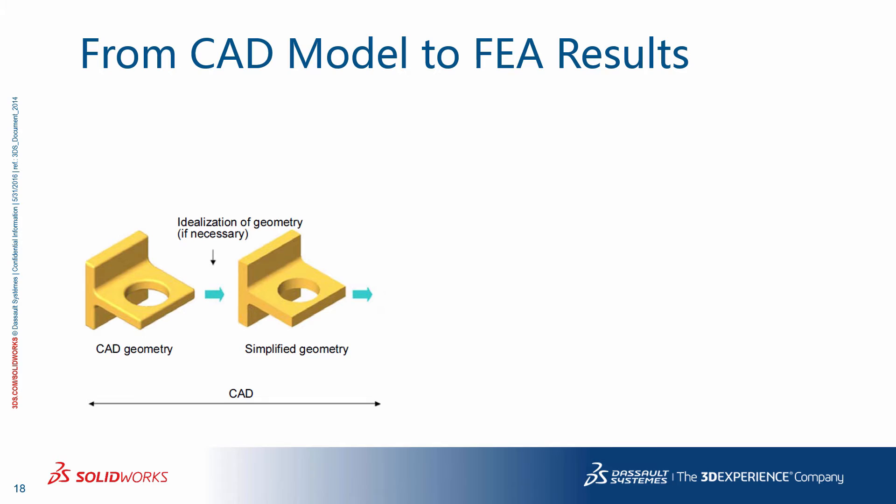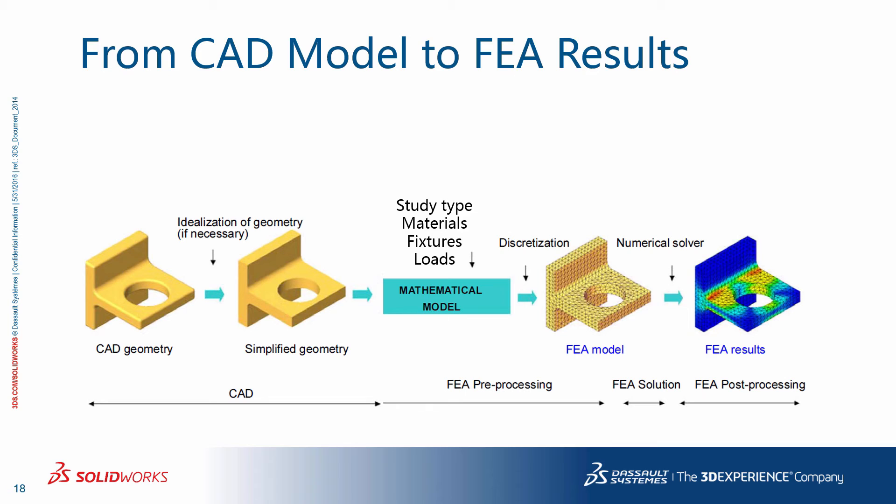Here are the steps you typically go through. Starting with the CAD geometry, you simplify the model if necessary and make some idealizations. For example, if there are features that are insignificant to the accuracy of your analysis and you are concerned about the size of the problem, you remove them. You then set up the problem. Define the study type, materials, fixtures, and loads. Have the program mesh the model and solve it. You then post-process the results.